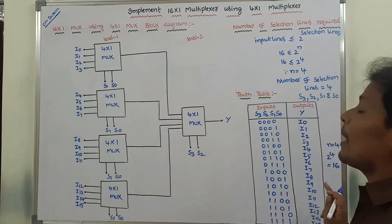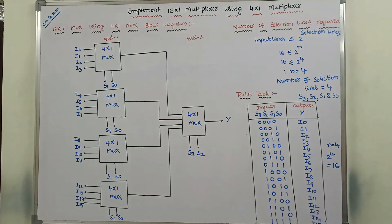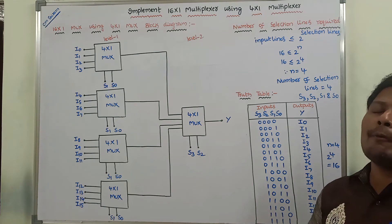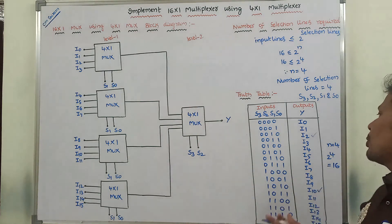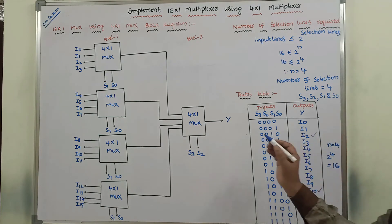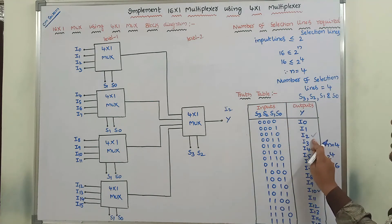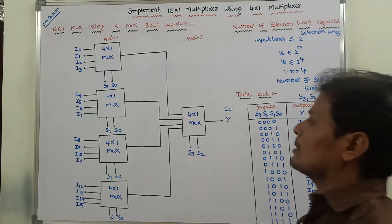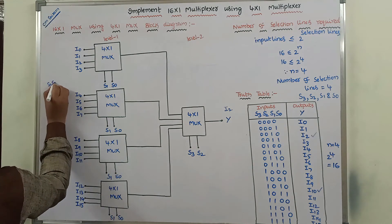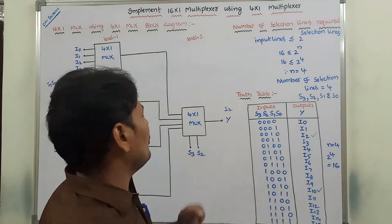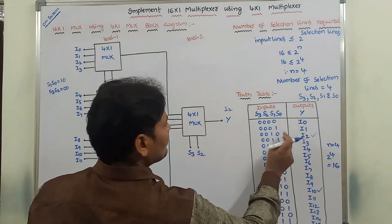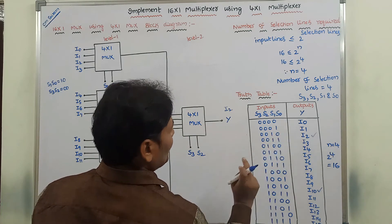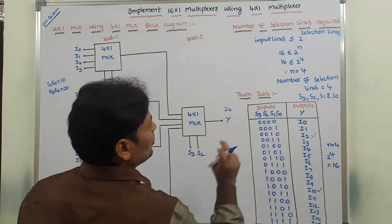We will observe two example outputs — I2 and I10 — to understand how the circuit works; the same procedure applies for all remaining outputs. For getting the output I2, S1 and S0 values are 1 and 0, and S3 and S2 values are 0 and 0. So the corresponding selection input combination is S3 S2 S1 S0 = 0 0 1 0.